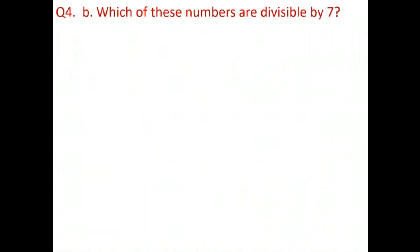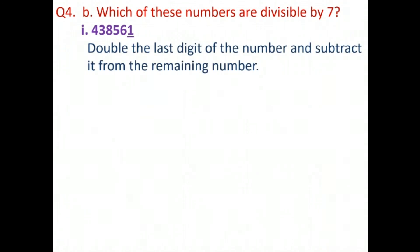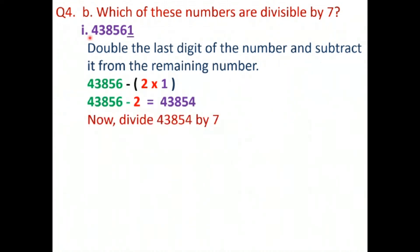Now question number 4B: which of these numbers are divisible by 7? Question 1 is 438561. The last digit is 1, so we double it to get 2. The remaining number is 43856. Subtracting 2 from 43856 gives 43854. Now we divide 43854 by 7: 7 sixes are 42, subtract to get 1, bring down 8 to get 18, 7 twos are 14, subtract to get 4, bring down 5 to get 45, 7 sixes are 42, subtract to get 3, bring down 4 to get 34.